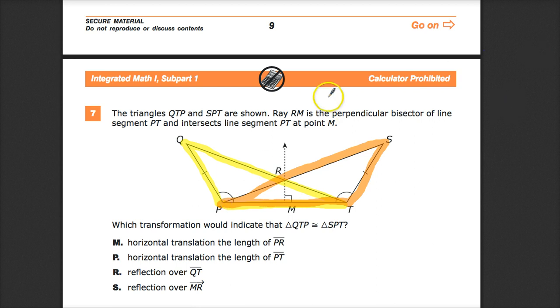So ray RM is the perpendicular bisector, and segment PT intersects right here. Now, it doesn't say that this is necessarily a midpoint of PT. It just says that it intersects, which does matter, believe it or not.